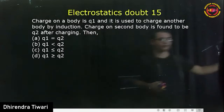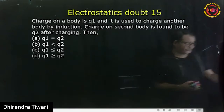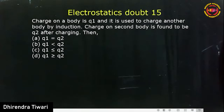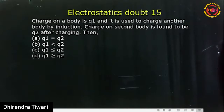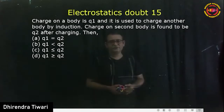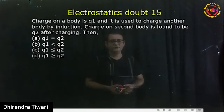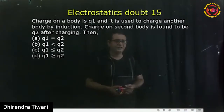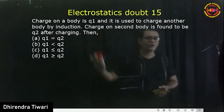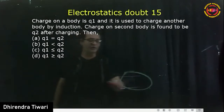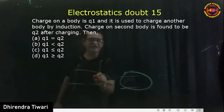The charge on a body is q1 and it is used to charge another body by induction. This is a very good question — if you don't do problems you cannot understand theory very well. This is about charge transfer by induction, so the charge on the second body is found to be q2 after charging. Tell me which of the four options are correct.